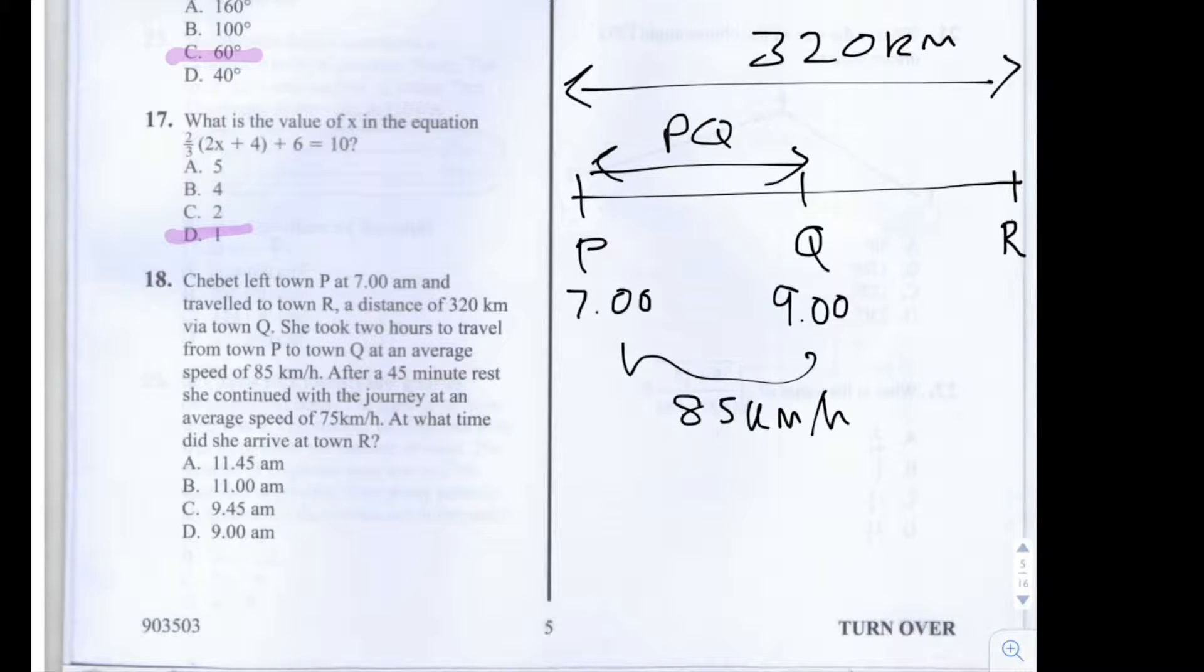We know that distance is equal to speed times time, so that means that the distance from P to Q is equal to 85 times by 2. That gives us 170km.